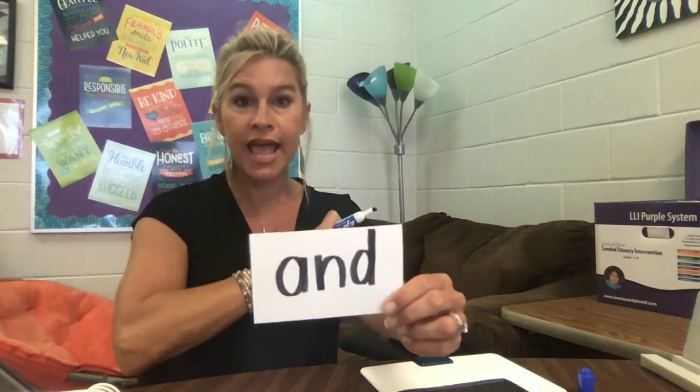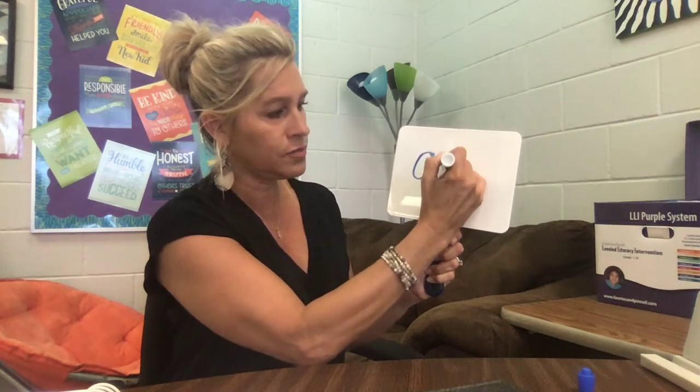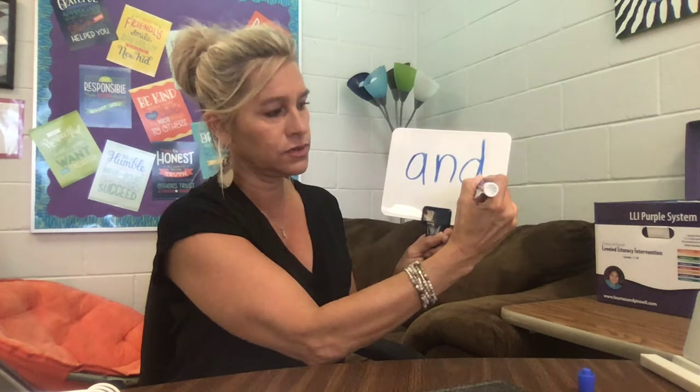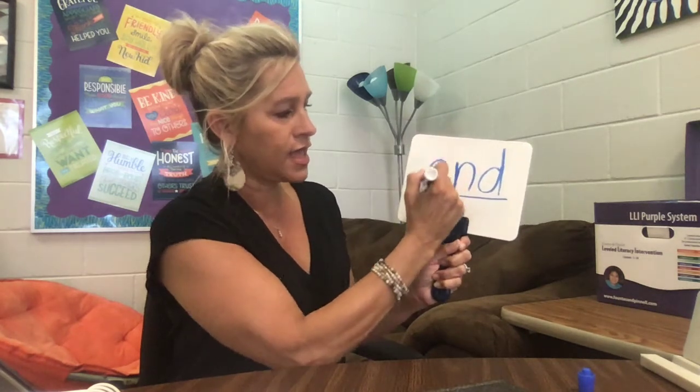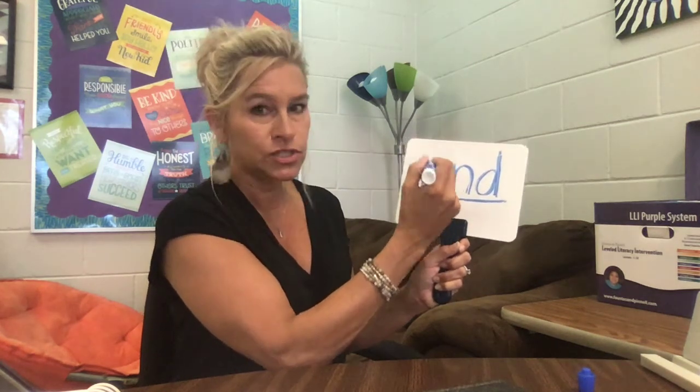Let's do 'and.' Ready — load it: 'and,' spell it: A-N-D, sweep it: 'and.' Good. Now let's write it. Remember our A starts up here like we would do a C — A-N, pull down, give it a hump. D starts over here, around, up and down. Trace it: A-N-D. 'And' — as in 'I like ice cream and cookies on top.' Trace over what you've written: A-N-D, 'and.' Very good! Clean your board.